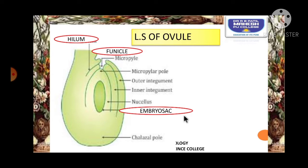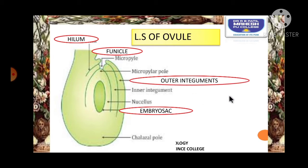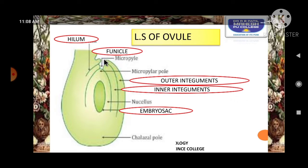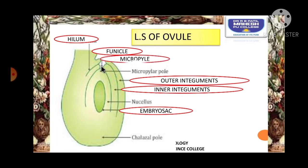Embryo sac contains a female gamete, that is an egg, making it an important part of the ovule. This embryo sac will be covered by protective coverings called integuments. There are two types: the integument present outside is called outer integument, and the one inside is called inner integument. Outer and inner integuments cover the full ovule but leave one small area, which is called micropyle.